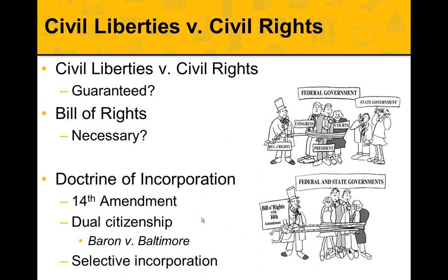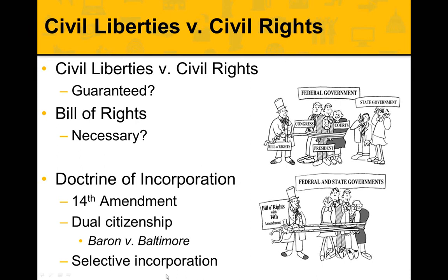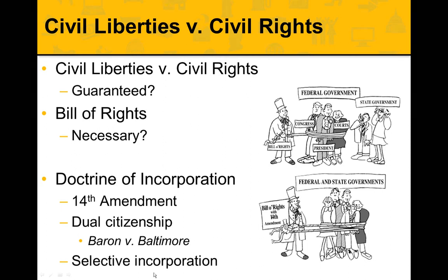Keep in mind that all of the Bill of Rights weren't incorporated into the states all at the same time — that's why we have what is called selective incorporation. The courts didn't go through each amendment and make states comply all at once. A court case had to be brought before the Supreme Court, and they selectively addressed each issue of the Bill of Rights and how it would be applied to the states.